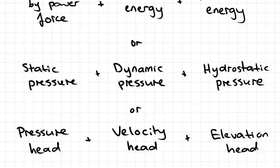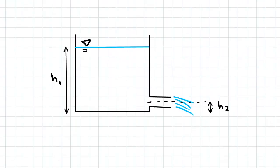The way we approach problems involving the Bernoulli equation is we first need to select a datum. A datum is simply a reference line to which all heights are compared. Since we're comparing z2 to z1, only the height difference is needed, so the datum can really be anywhere. In this diagram, if we establish a datum at the bottom of the tank, we just need to make sure we're consistent with that datum.